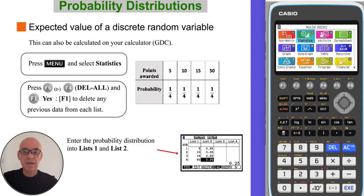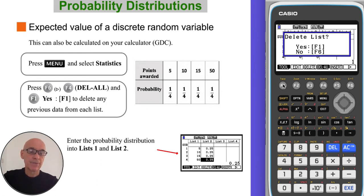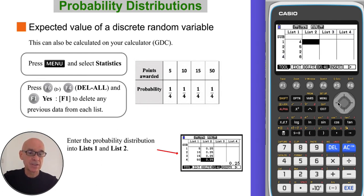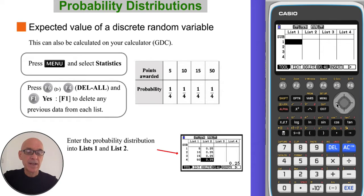The expected value can also be calculated on your calculator. If you press Menu, option two for Statistics, and then F6 followed by F4 to delete and F1 to delete the contents of each list. Moving across and repeating the process, F4 and F1, and then we can enter the points awarded into the first list.